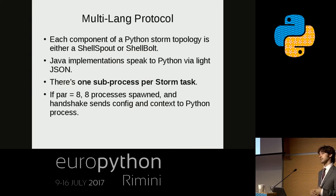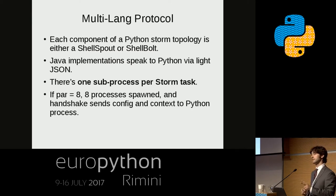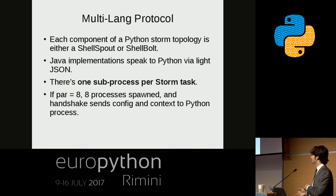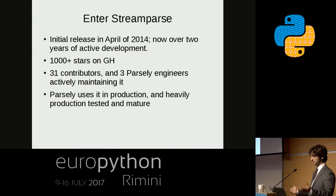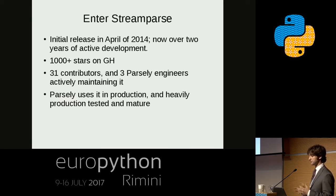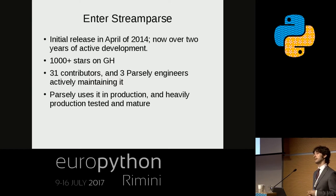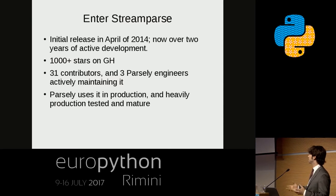There are two projects we maintain: PyStorm, which is the multi-lang protocol implementation under the hood, and StreamParse, which is your interface to Storm that uses PyStorm under the hood. StreamParse was initially released in 2014, has had over two years of active development, and is heavily battle-tested. It has a lot of stars on GitHub, 31 contributors, and three engineers actively maintaining it. We pass many millions of events through it every day.